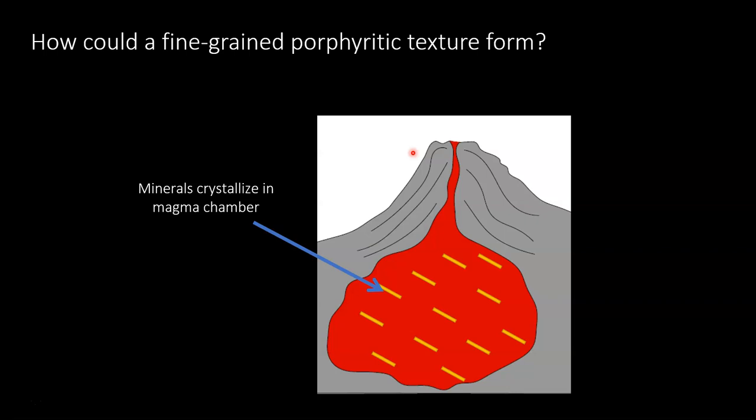So how does the fine-grained porphyritic work? If fine-grained textured rocks form at the surface but some crystals are larger, that means they've been growing for longer. Some crystals are actually crystallizing before the magma is erupted, inside the magma chamber. You'd see a set of crystals that spent more time crystallizing, ending up larger than the rest of the magma erupted out of the volcano. There are distinct different crystal sizes, meaning different cooling rates — some cooling inside the magma chamber and some on the surface.